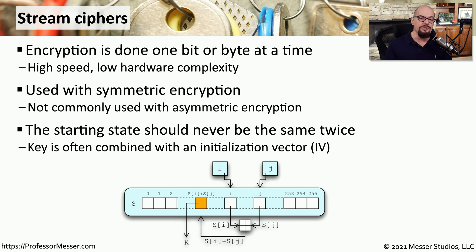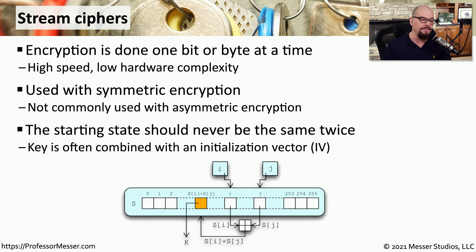One of the challenges with stream ciphers is you don't know what's coming later in the stream until you get to that particular byte. That means randomization of this data could be challenging, especially if multiple bytes input into the stream are identical — you end up with identical bytes on the encrypted side. So there's often an initialization vector, or IV, that is added to the stream cipher to add some randomization to the encryption process.